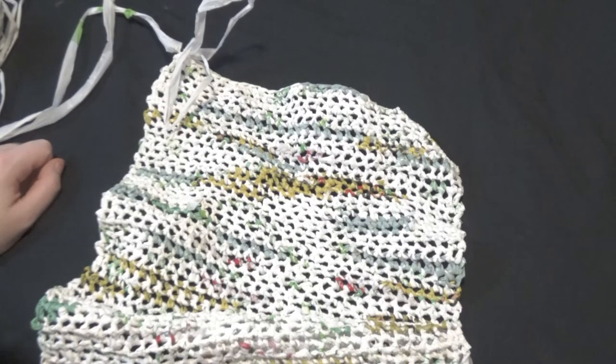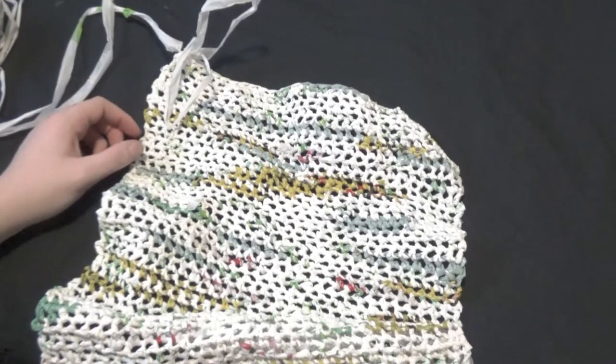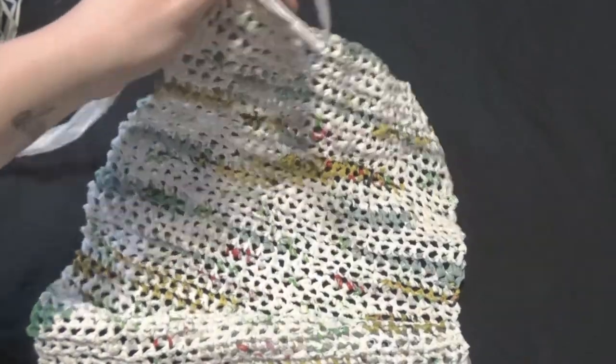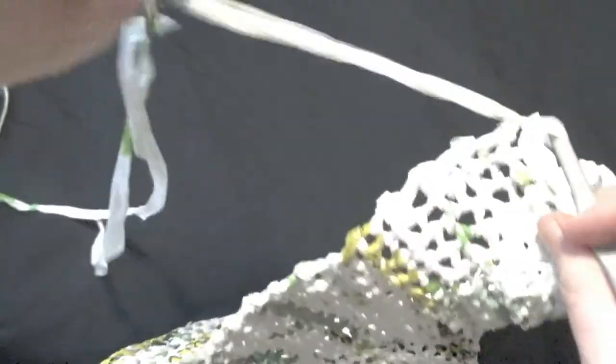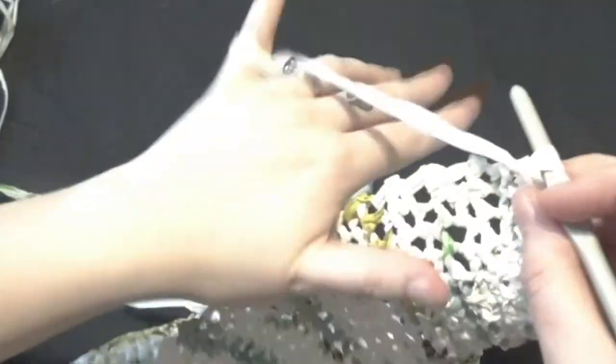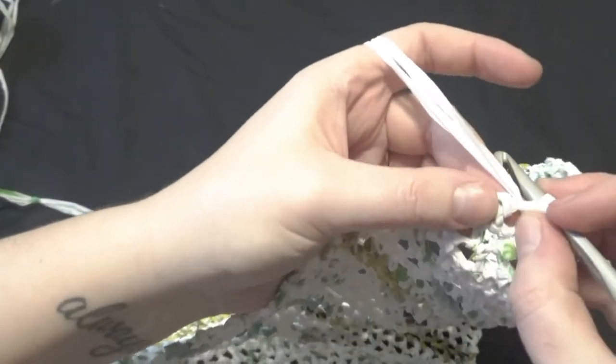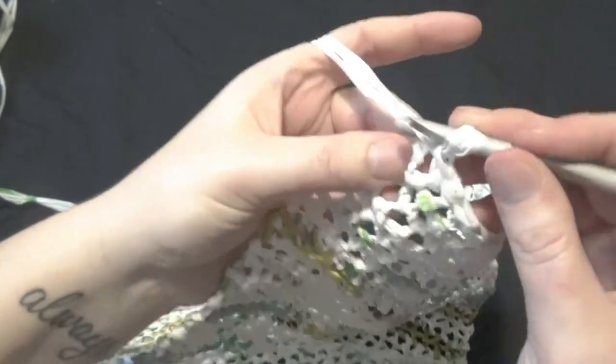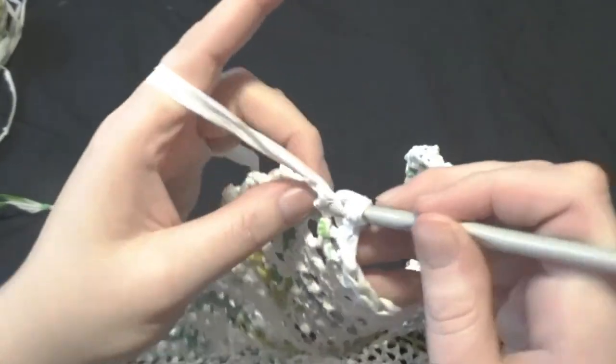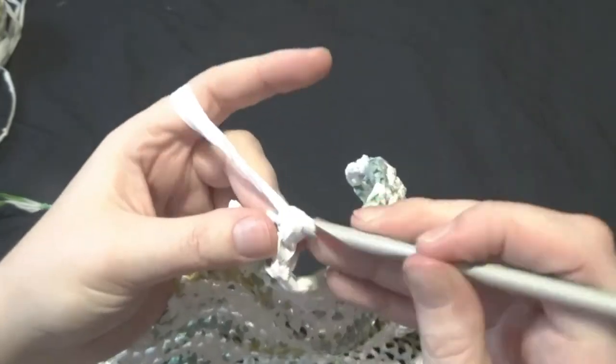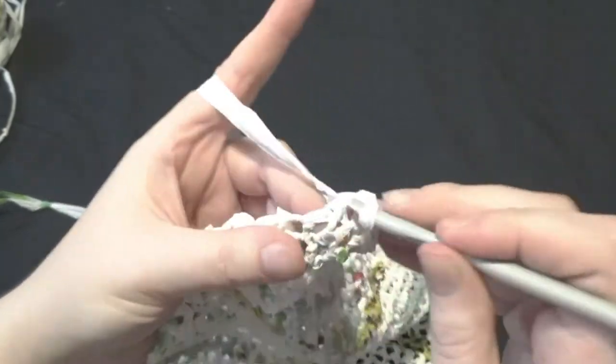Just to sew that together. So how we do that is we start with our project here. And we're just going to go, we finished here, we're just going to go in that same spot and we're going to do another two stitches. So that's one, two.